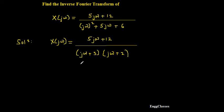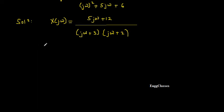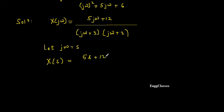Before I take the inverse Fourier transform, I have to reduce this to standard form — the numerator cannot remain as is. I need to apply partial fraction expansion. For simplicity, let me substitute s = jω; I will then replace it back later. So X(s) = (5s + 12) / ((s + 3)(s + 2)).